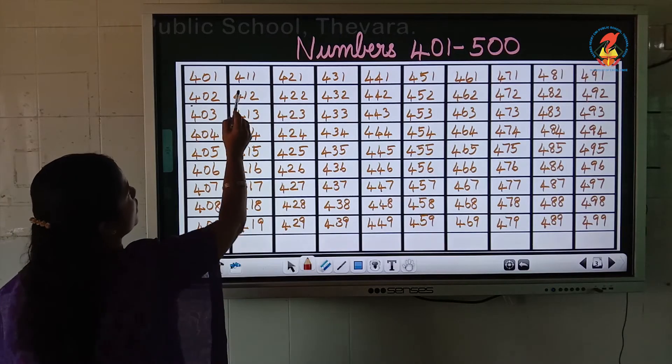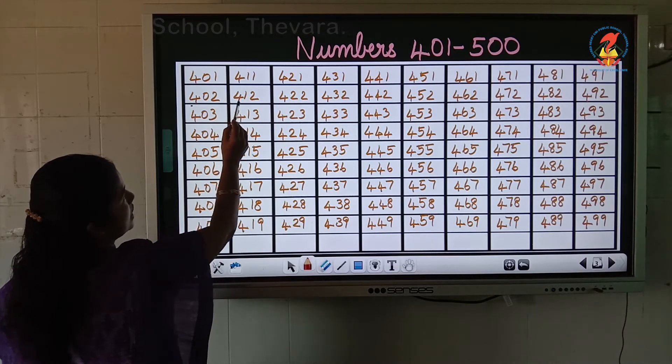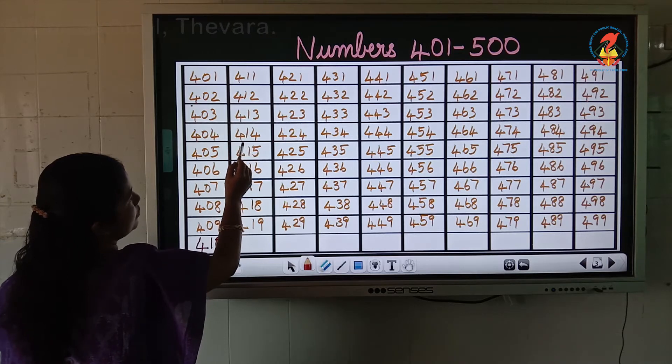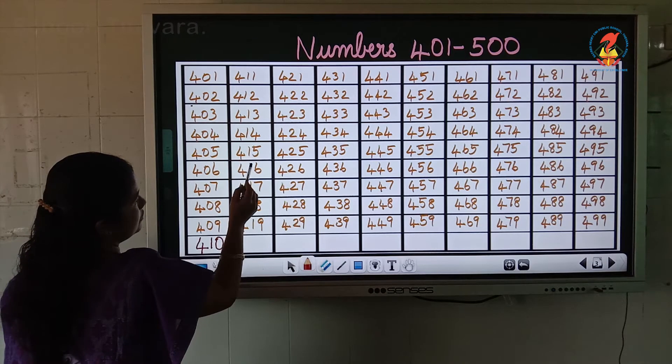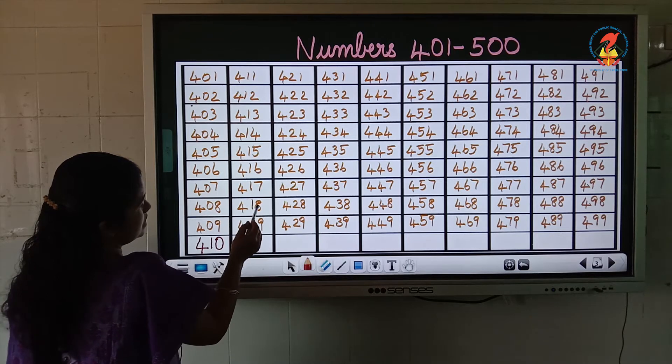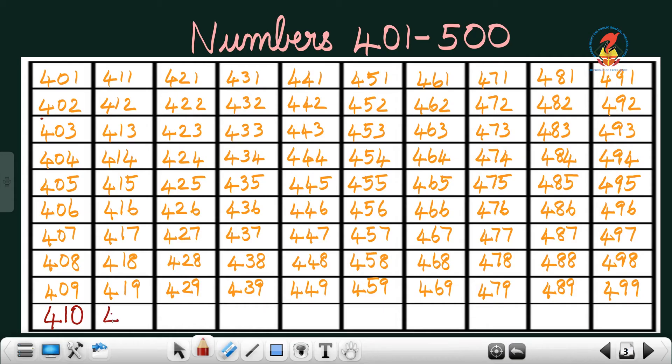Then 411, 412, 413, 414, 415, 416, 417, 418, 419, 420.